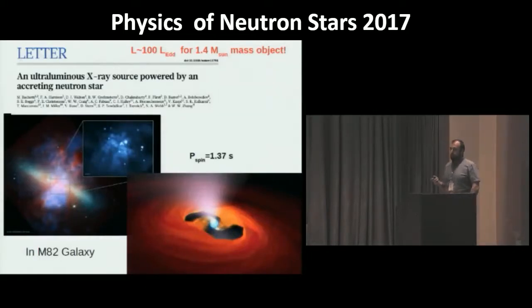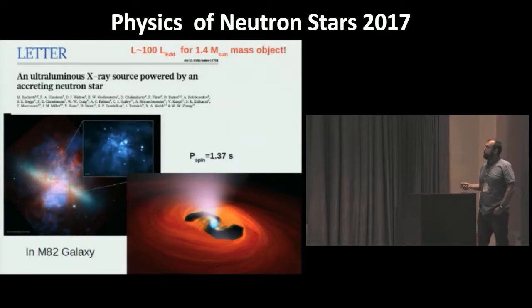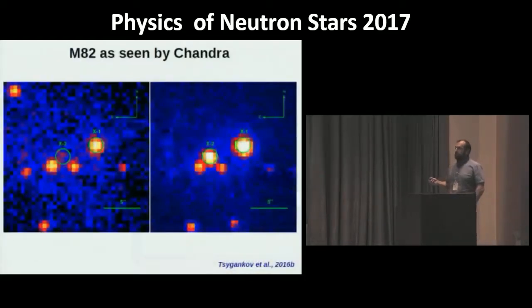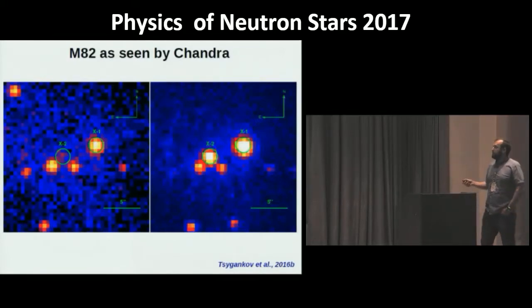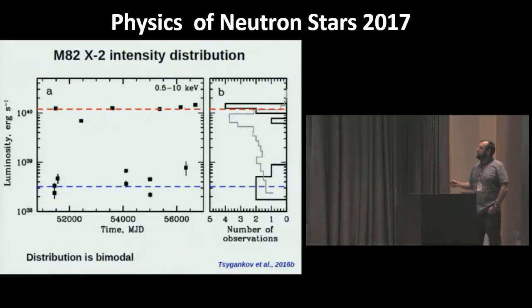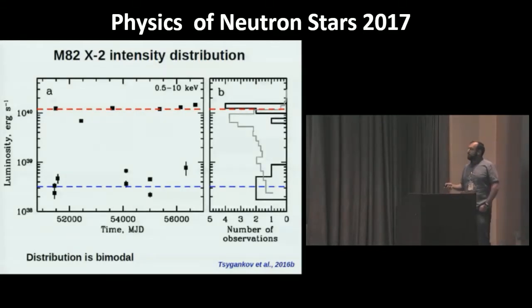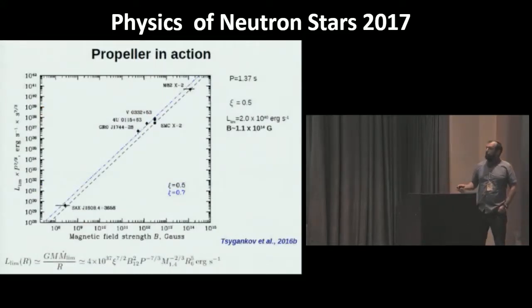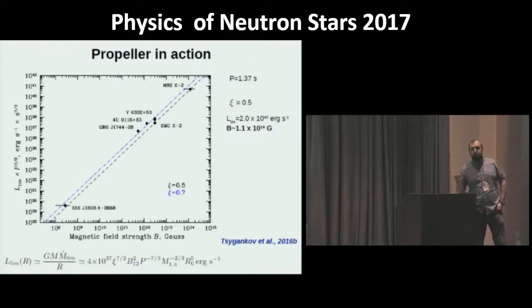We applied this method to the recently discovered pulsating ULX in M82, called M82 X-2. In the Chandra data the source can be very bright or nearly absent, and the flux distribution is clearly bimodal. We interpret this as transitions between accretion and propeller regimes. Using our equation, we estimate the magnetic field strength in this system at about 10^14 Gauss, which coincides with the independently measured value from the accretion column model proposed by Alexander Mushtukov.